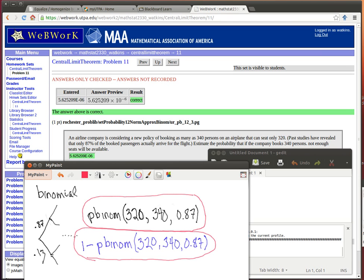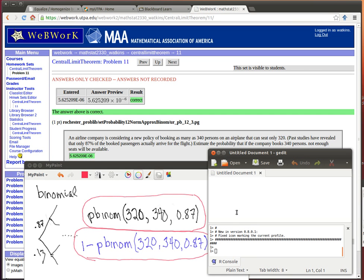So I just put that particular amount into R. Let me just do it right now so that we can see what happens. I'm just going to type it right into R rather than into the script editor. Pbinom of 320, 340, 0.87.